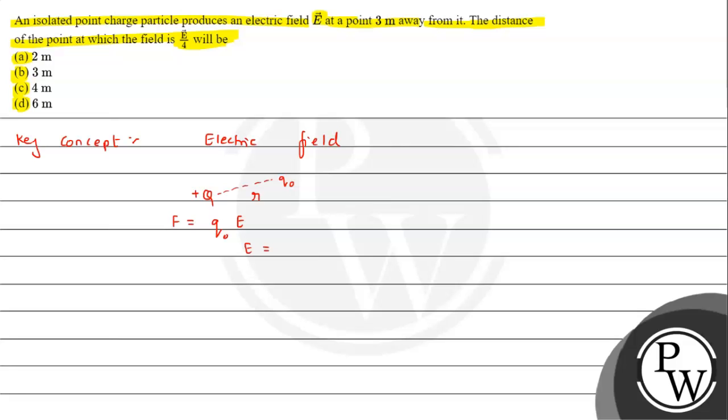So from this we can say that E, that is electric field intensity, is equal to F upon q0. That is kQ upon r square into q0, which gives us kQ upon r square. So this is the result we need to keep in mind regarding the electric field intensity, that is kQ upon r square for a point charge.